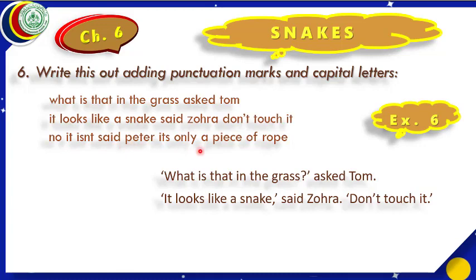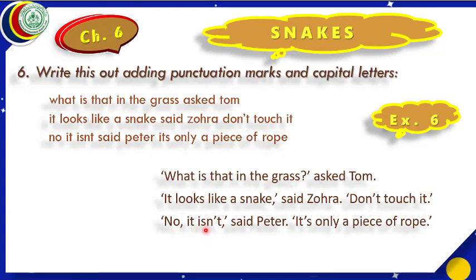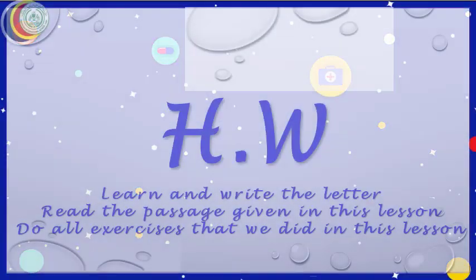The third line: 'No, it isn't,' said Peter. 'It's only a piece of rope.' 'No' will be in inverted commas, followed by a comma, then 'it isn't' with an apostrophe, then a comma. 'Said Peter' — 'P' for Peter is capital because first letters of names are always capital. Then 'It's only a piece of rope' in inverted commas with an apostrophe. The answer: 'No, it isn't,' said Peter. 'It's only a piece of rope.' with closed inverted commas. This was our exercise 6.